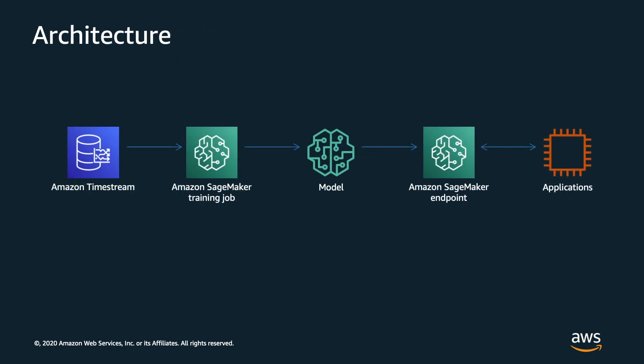So to recap, with a high-level look at the architecture of our exercise: we will generate and store sample data in Timestream, then we will launch a SageMaker training job using Timestream for training data to create a model, we'll create an endpoint with SageMaker using our model artifacts, and this provides a RESTful interface for client applications to use our model.